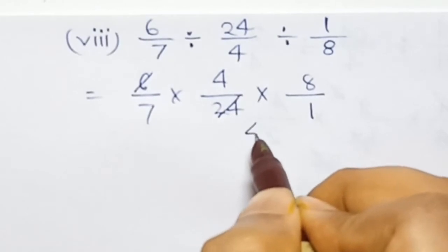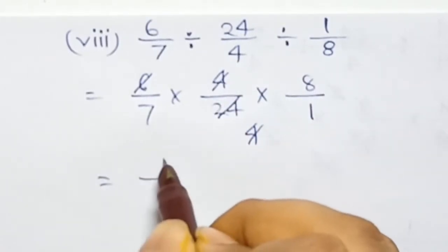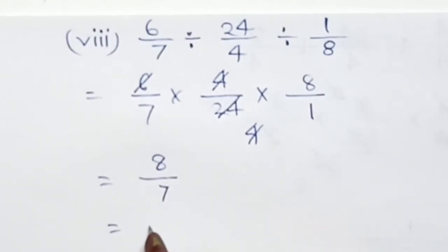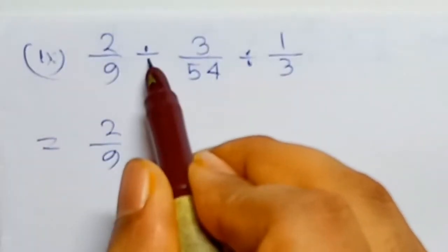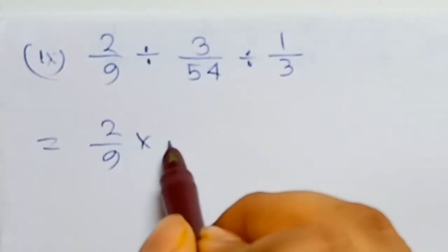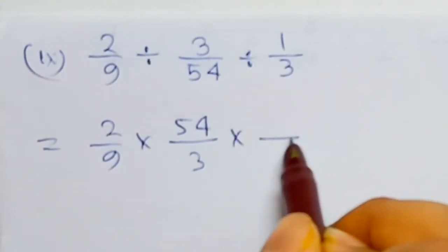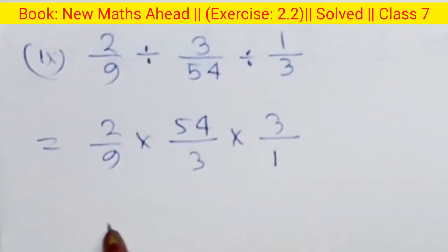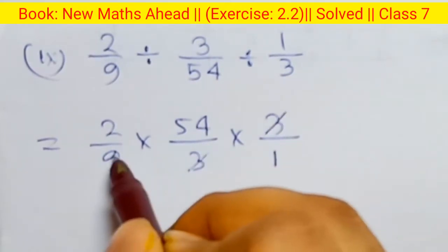Next, divide becomes multiplication — 1 by 8. So six and twenty-four: four and four cancel. Numerator value is 8, denominator is 7. So 8 divided by 7 — 1 whole 7, answer is 1 by 7 over 9. Next, divide becomes multiplication: 54 by 3. Next, multiply 3 by 1 — three and three cancel, three and three cancel, answer is 9.